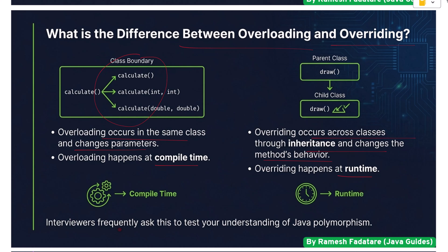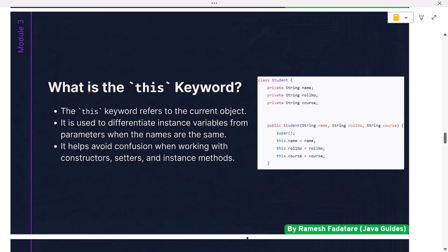What is the 'this' keyword? The 'this' keyword refers to the current object. It is used to differentiate instance variables from parameters when the names are the same. It helps avoid confusion when working with constructors, setters, and instance methods.